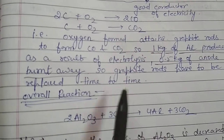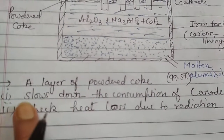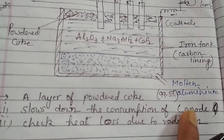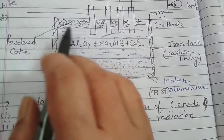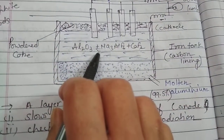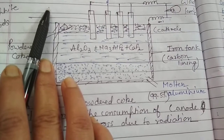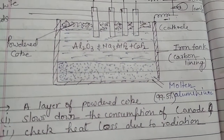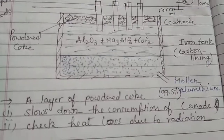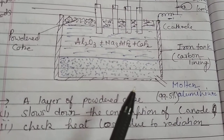Why have we taken the carbon coke powder on the surface of the electrolyte? There are two reasons. First, a layer of powdered coke is taken to slow down the consumption of the carbon anode. Because oxygen gas formed attacks the carbon rod, if we place powdered coke on the surface of the electrolytic mixture, oxygen first reacts with the powdered coke and converts into carbon monoxide and carbon dioxide — thereafter it is able to attack the anode. So we do not need to replace the anode very early.